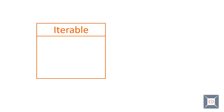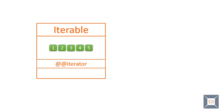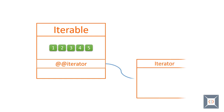Coming back to Iterable and Iterator: an Iterable is an object that wants to make its values accessible in a particular way. The default form of Iterable is enumeration — that is, it lists all of its values one by one. Iterable implements a factory method that returns an Iterator. An Iterator is a pointer for getting the next value from the data structure.